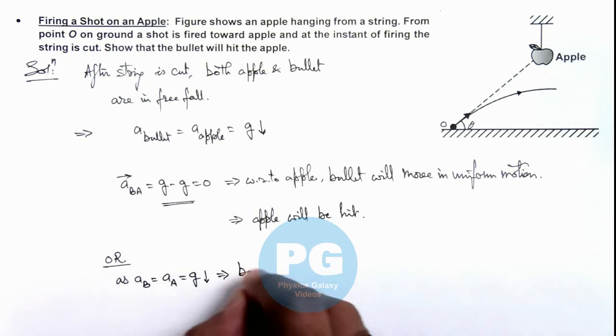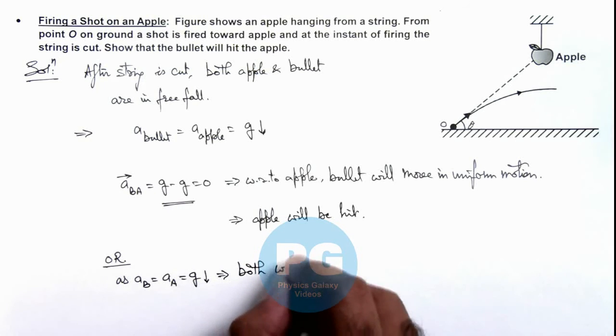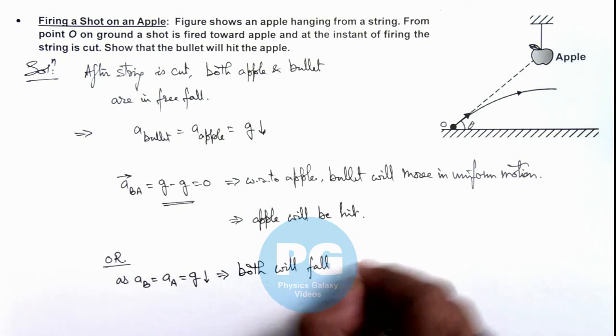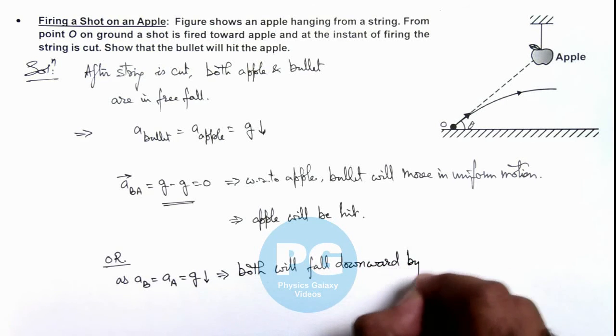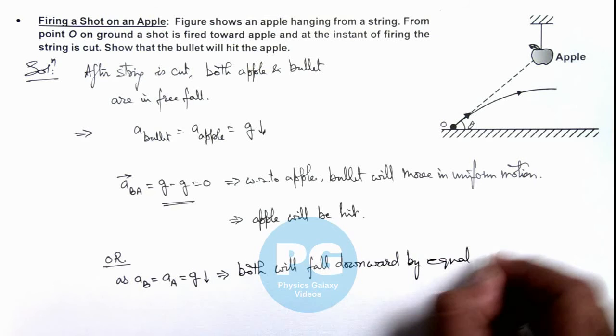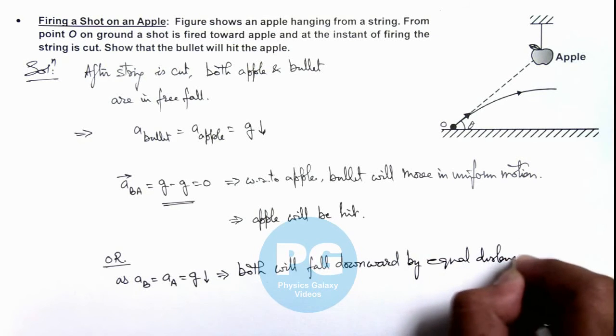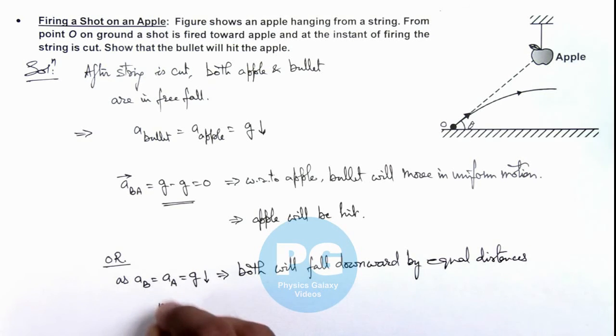This implies both will fall downward by equal distances in equal time.